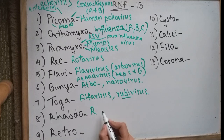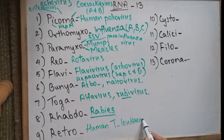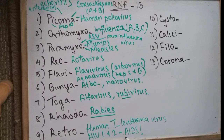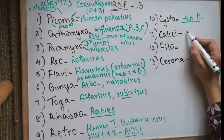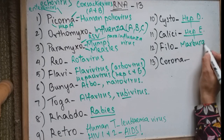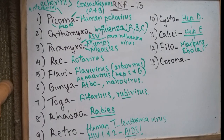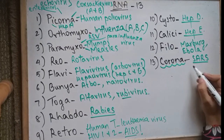Then we have Rhabdovirus, which has the rabies virus causing rabies. Retroviridae is for AIDS and leukemia: the human T-leukemia virus causing leukemia, and HIV-1 and HIV-2 causing AIDS. Then Cysto, which is the Hepatitis D virus causing Hepatitis D. Caliciviridae is the human Hepatitis E virus for Hep E. Filoviridae has Marburg virus and Ebola virus causing Marburg and Ebola hemorrhagic fevers. And the last one is Coronavirus, which causes SARS — Severe Acute Respiratory Syndrome.